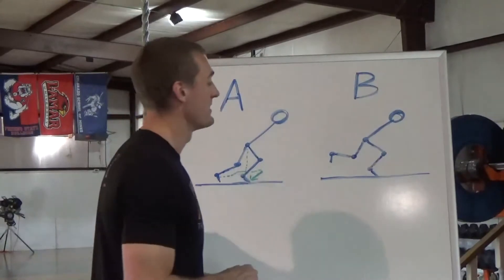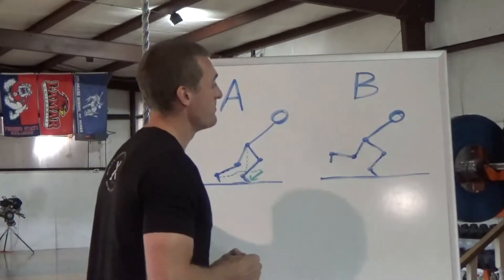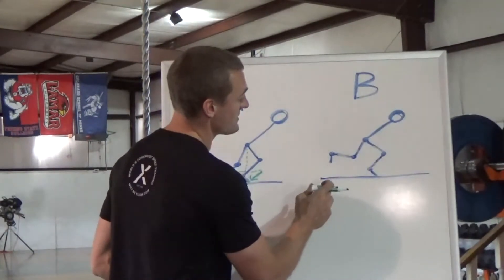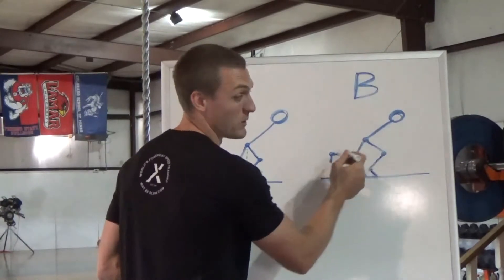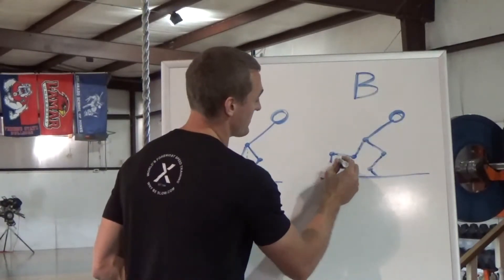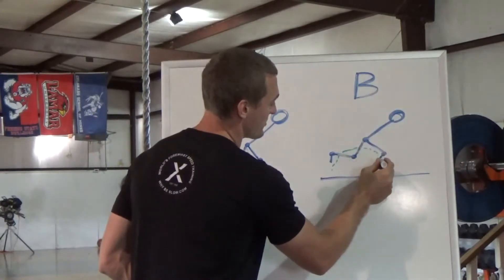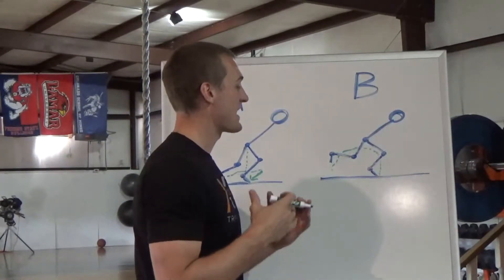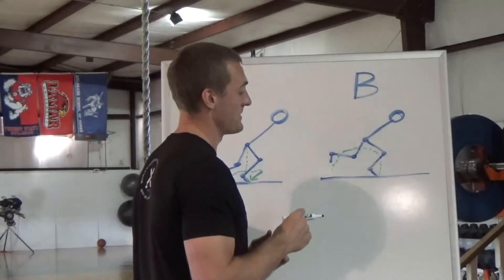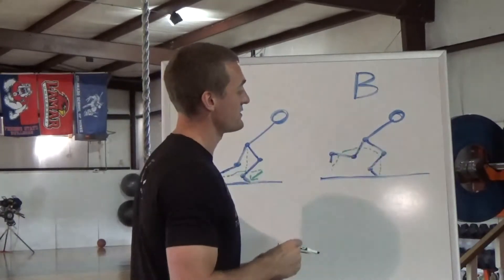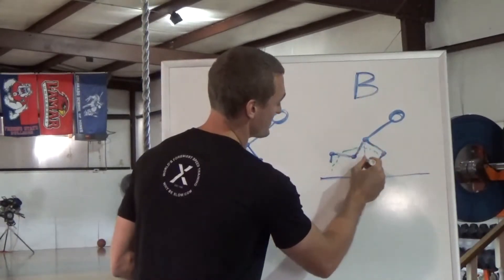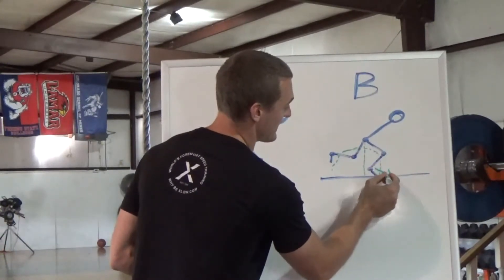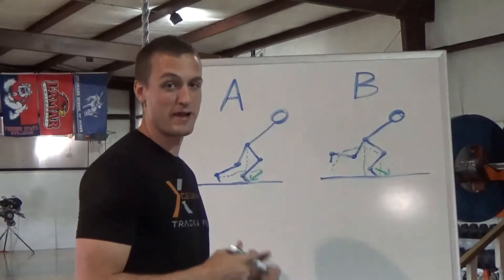Athlete B, on the other hand, is not a skilled accelerator. Athlete B may or may not hit triple extension, but regardless, when the back foot leaves the ground, it's going to cycle up more, taking a path underneath the hip and then coming more straight down. There may or may not be any backwards foot velocity, but if there is, it's not going to be enough to balance out the forward velocity of the sprinter. The foot is also not going to get underneath the hip — it's going to be out in front of the hip a little bit, with a little bit of forward velocity going into the ground, creating braking force.